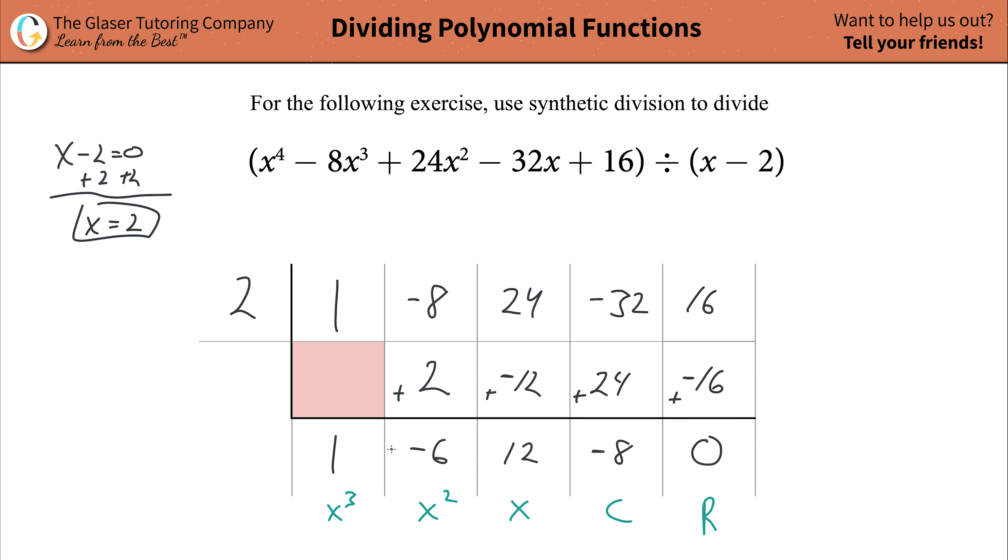Before you start writing out your quotient, which is the answer when you take a dividend and divide it by a divisor, you have to check one thing. You have to go back to your divisor and identify the coefficient of your x term. The coefficient in this problem of the x term is 1. Whatever that coefficient is, you need to take that coefficient and divide it into every single value at the bottom of your synthetic division table.